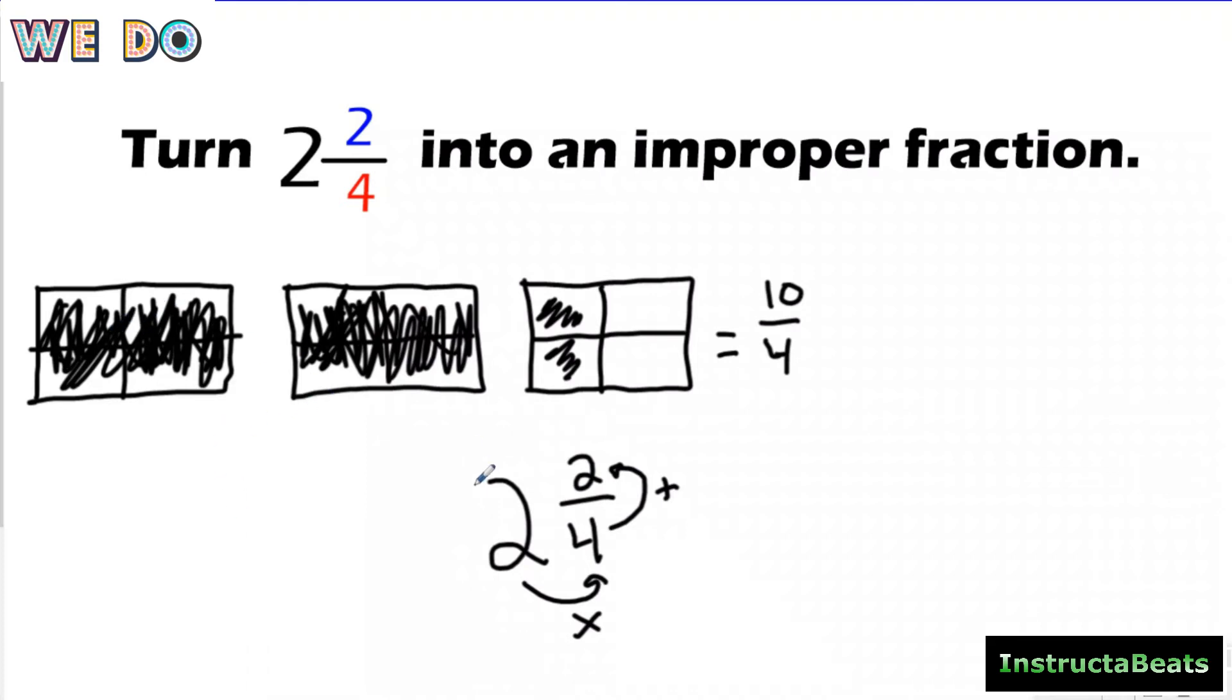Because I know multiplication is groups of. So again, I have two groups of four, right? Because my denominator is four. If I don't want to count these up one, two, three, four, five, six, seven, eight, I know that I have one, two groups, and there's four in each group, right? So two times four, and then I would have to add my last two pieces to that. So I have to add my numerator.